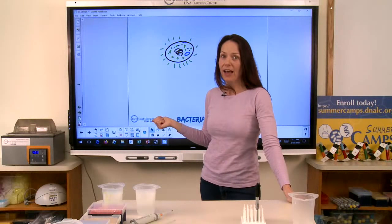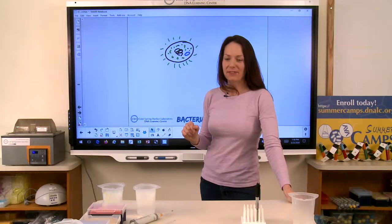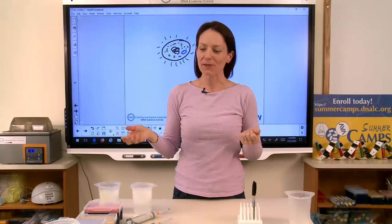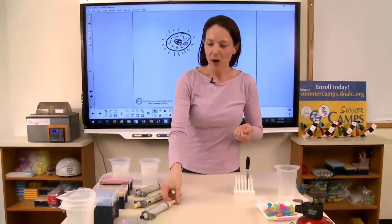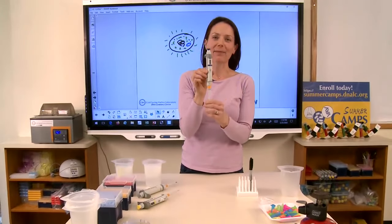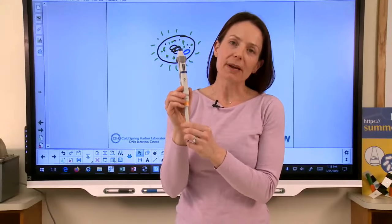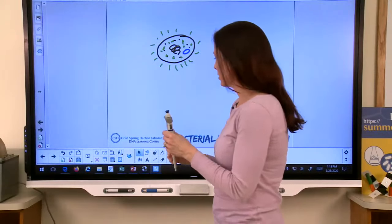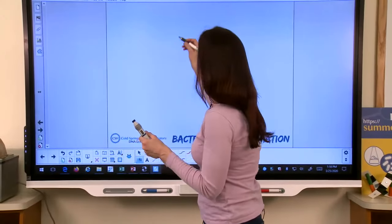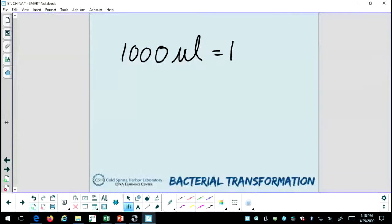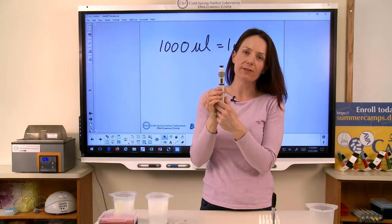So if you guys are ready, I'd like to start and show you the different steps of the lab. In front of me, I have a lot of equipment. One of my favorite pieces of equipment in the lab is a pipette. I love using pipettes. These are used for measurement. They're used to measure small volumes, which we call microliters. The symbol for microliter looks like this. There are 1,000 microliters in one milliliter.